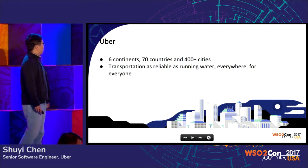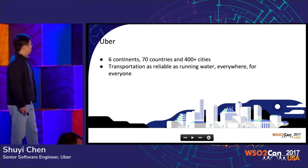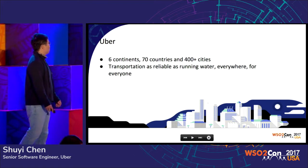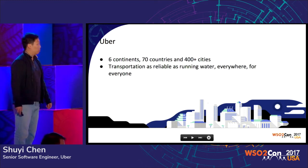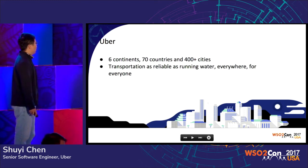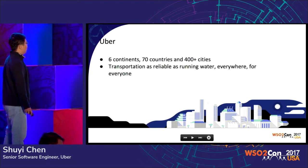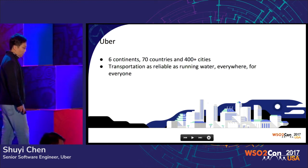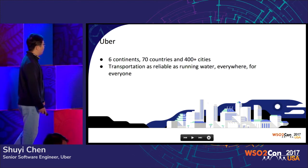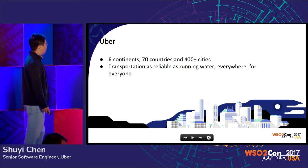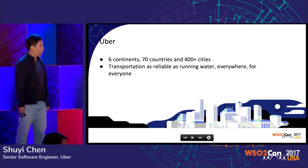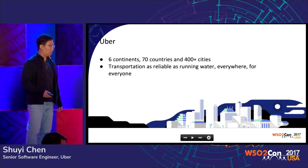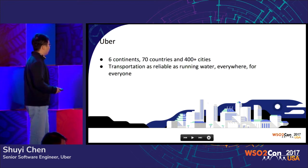First, I'm going to introduce a little bit. In Uber, our mission is to make transportation as reliable as running water everywhere for everyone. We are in six continents, 70 countries, and 400-plus cities, and it's growing.